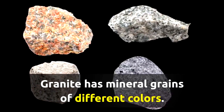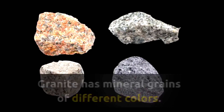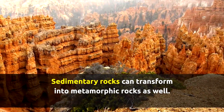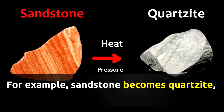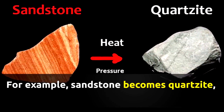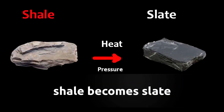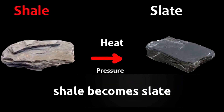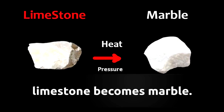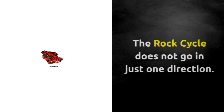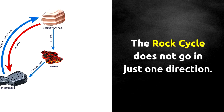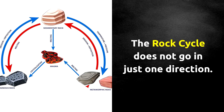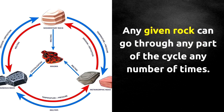Granite has mineral grains of different colors. Sedimentary rocks can transform into metamorphic rocks as well. For example, sandstone becomes quartzite, shale becomes slate, and limestone becomes marble. The rock cycle does not go in just one direction. Any given rock can go through any part of the cycle any number of times.